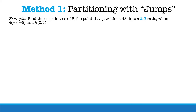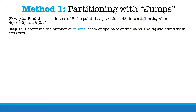Let's take a look at the first method — partitioning with jumps. For example, find the coordinates of P, the point that partitions AB into a two to three ratio, when A is negative eight, negative eight, and B is two, seven. To use this method, we first need to determine the number of jumps by adding the two numbers in the ratio. Here the ratio is two to three, so we add two plus three, which equals five.